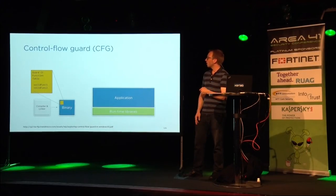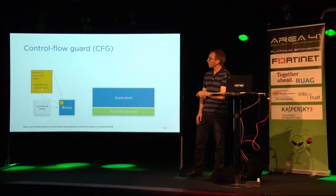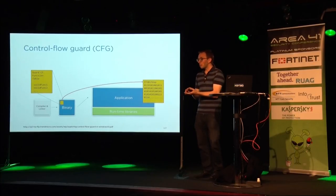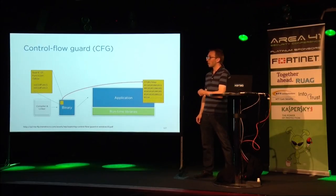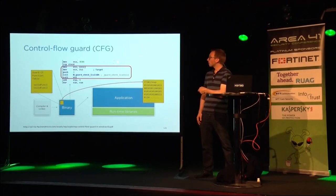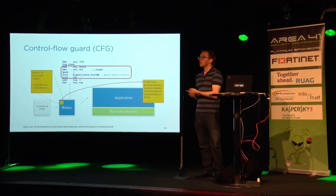The implementation works as follows: the compiler generates a list of valid functions and puts it into the binary. During runtime, this list of functions is compressed into a bitmap and put into memory. A guard check function guards every indirect call or indirect jump.